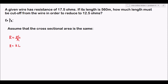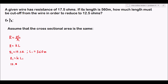We can write R equals k times L, where k is a constant. For the first condition, R1 is 17.5 ohms, and L1 (the initial length before the wire is cut) is 560 meters. Substituting: 17.5 equals k times 560.